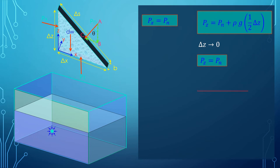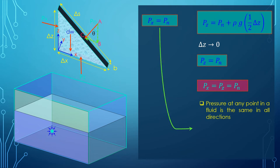We can see that all the pressures are equal. From this we conclude pressure at any point in a fluid is same in all directions. Another conclusion is that pressure in a fluid at rest does not change in the horizontal direction.